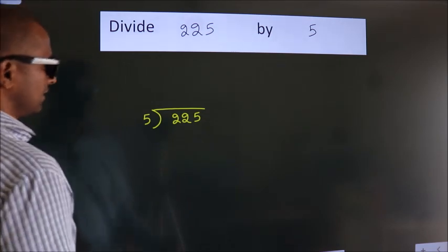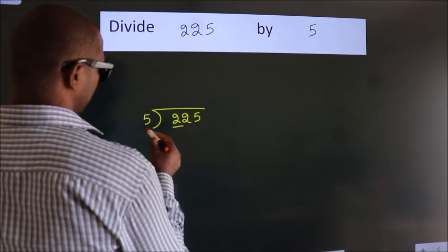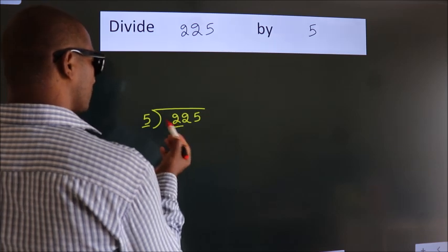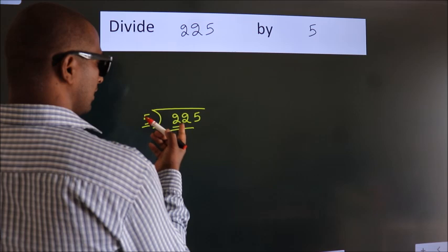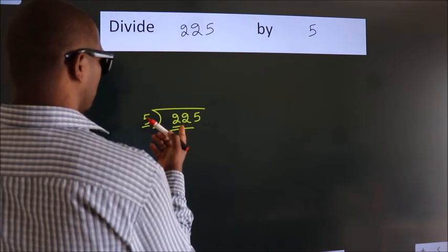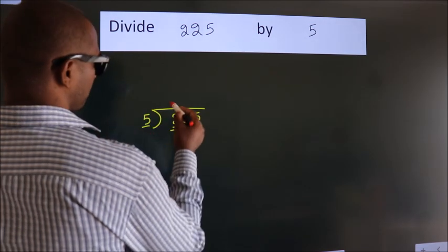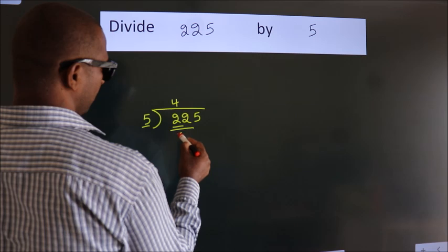Next. Here we have 2. Here 5. 2 is smaller than 5, so we should take 2 numbers. 22. A number close to 22 in the 5 table is 5 times 4 equals 20.